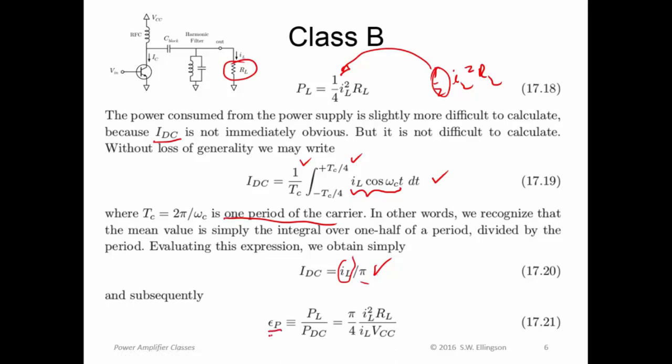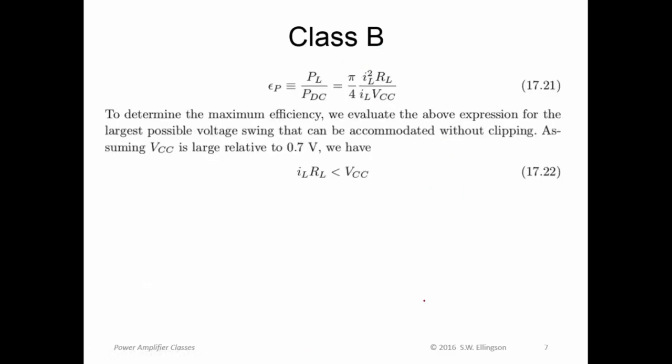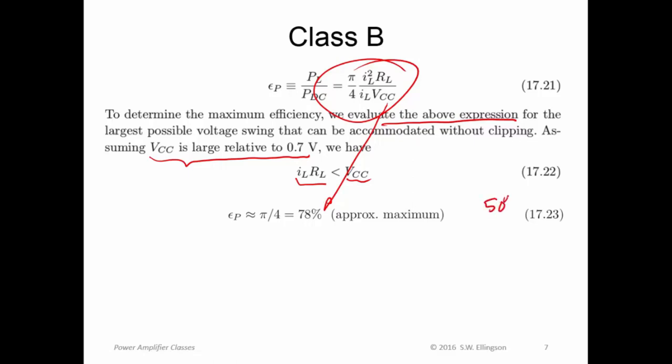And then remember efficiency, in this case collector efficiency, is P sub L, which we obtained up here, divided by PDC. So this is the efficiency. We can evaluate that a little bit further by evaluating the expression for the largest possible voltage swing that can be accommodated without clipping. And if we assume that VCC is large relative to 0.7 volts, then that means that I sub L, R sub L should be less than V sub CC to achieve this condition. And then we can evaluate this expression. We obtain 78%.